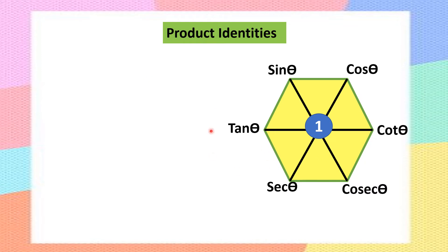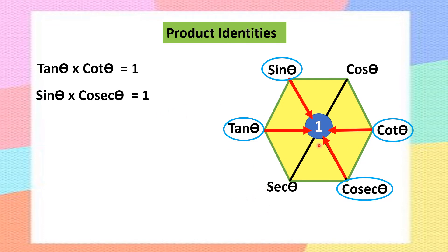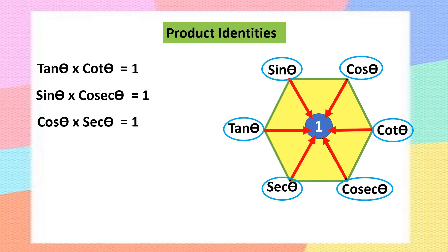Now for the product identities. The opposite pairs in the hexagon are reciprocals of each other: tan theta multiplied by cot theta equals 1. Sin theta multiplied by cosecant theta equals 1. Cos theta multiplied by secant theta equals 1. These products equal 1 because each pair consists of a ratio and its reciprocal.